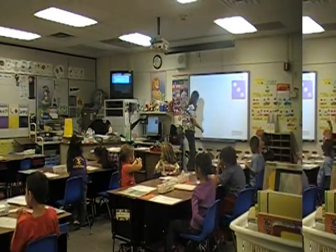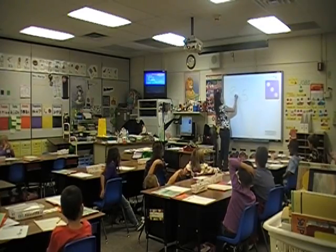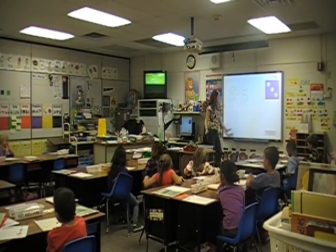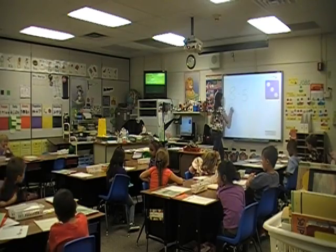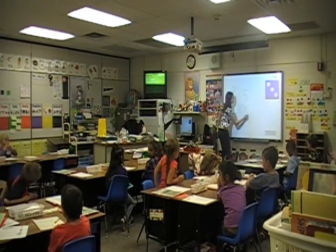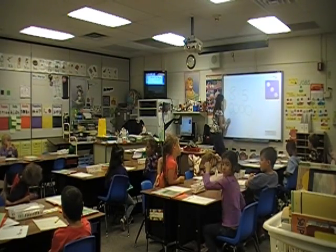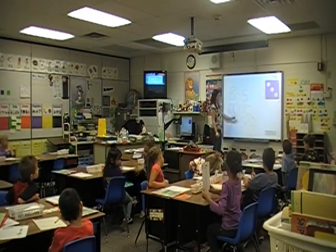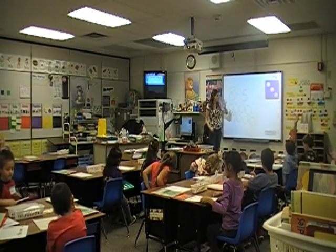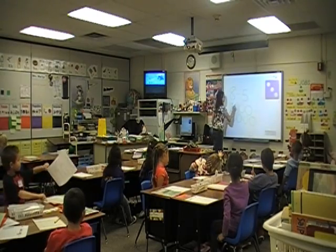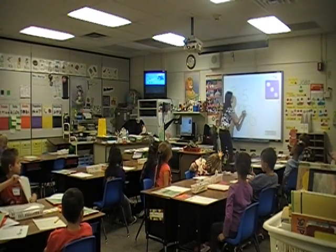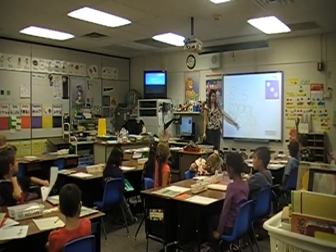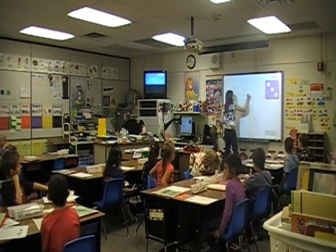I'm going to go over what we learned today. So 8 minus 5 — let's draw out our picture so we can find our answer. 1, 2, 3, 4, 5, 6, 7, 8. Take away 5, so we cross out 5: 1, 2, 3, 4, 5. Let's count how many we have left — 3! Great job guys.